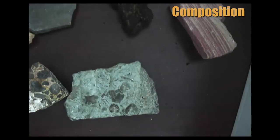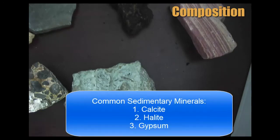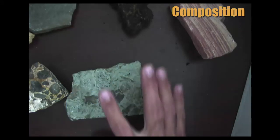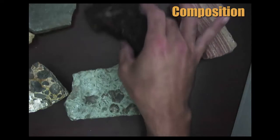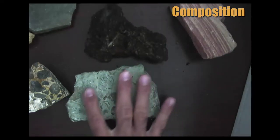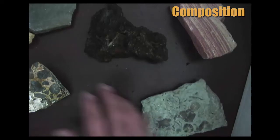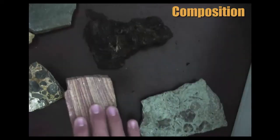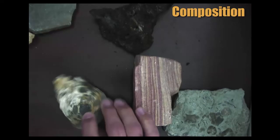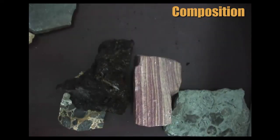So composition-wise, you can describe it as being a mineral. The common minerals are halite, gypsum, or calcite. You could also go the route, depending on what you have, of just describing what it's made of - it's made of a bunch of fossils in a calcite matrix, a bunch of sand grains, a bunch of large pebbles, or plant materials. That would be another way you could describe its composition. It doesn't just have to be the minerals.